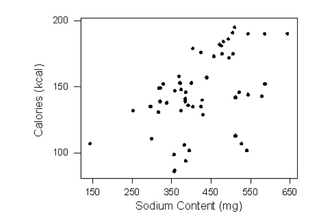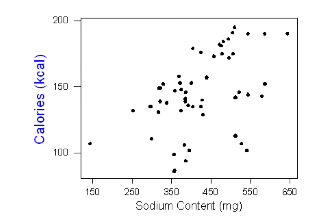The scatterplot below displays the relationship between the sodium and calorie content of 54 brands of hot dogs. Note that in this example there is no clear explanatory-response distinction, and we decided to have sodium content as the explanatory variable and calorie content as the response.